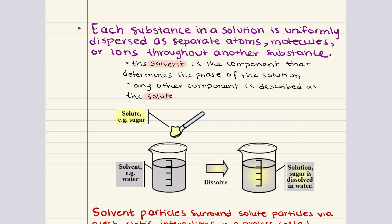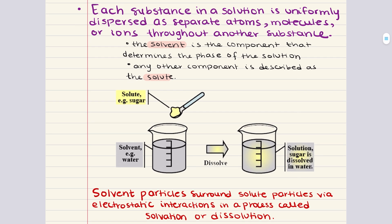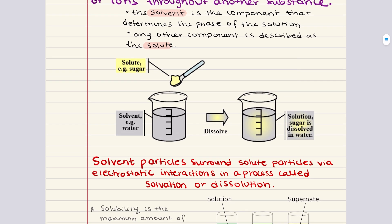So, when the new interactions are stronger than the original ones, then solvation is exothermic. And the process is going to be favored at low temperatures. And when the new interactions are weaker than the original ones, then solvation is endothermic, and the process is favored at high temperatures.